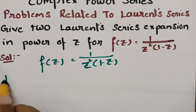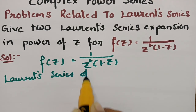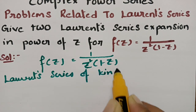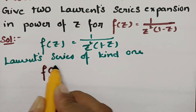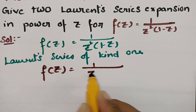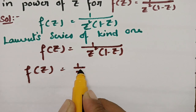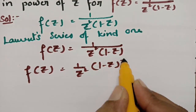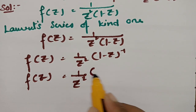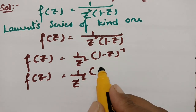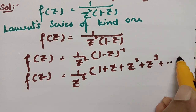See the Laurent series of the first kind. f(z) = 1 / (z² · (1 - z)). So f(z) can be written as (1/z²) · (1 - z)⁻¹. Now (1 - z)⁻¹ is nothing but 1 + z + z² + z³ + and so on.